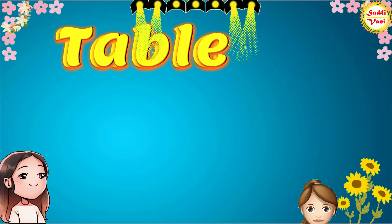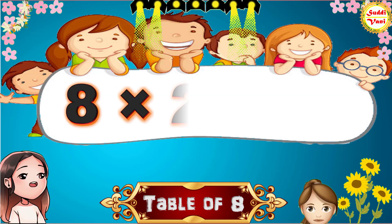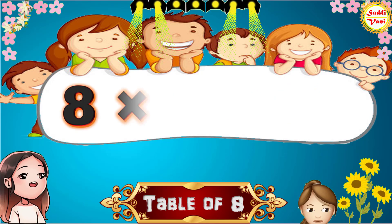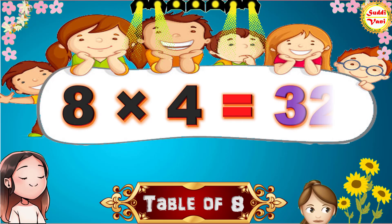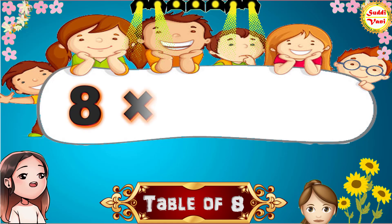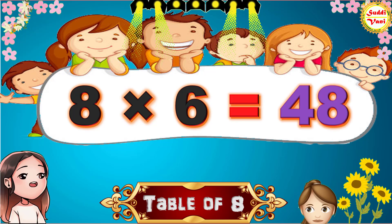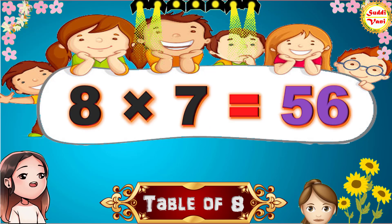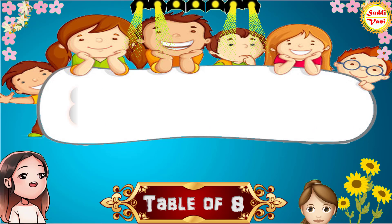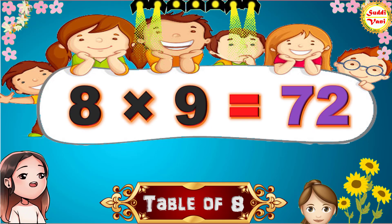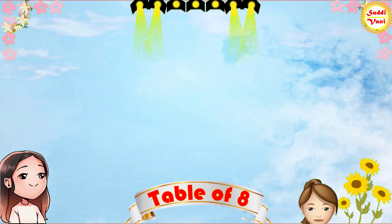Hello children, we will learn table of 8. 8 1's are 8, 8 2's are 16, 8 3's are 24, 8 4's are 32, 8 5's are 40, 8 6's are 48, 8 7's are 56, 8 8's are 64, 8 9's are 72, 8 10's are 80. Once again,